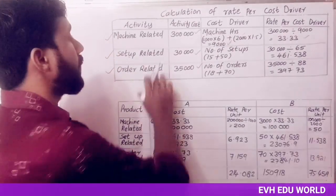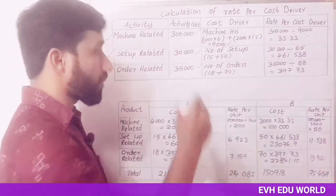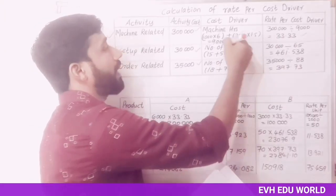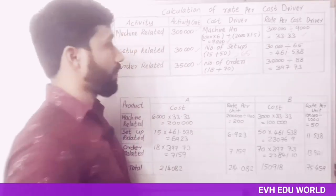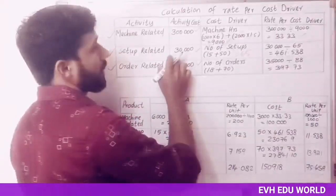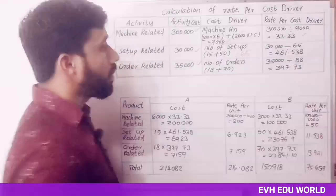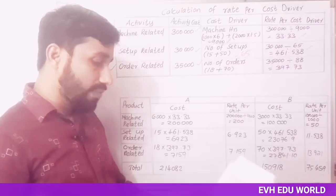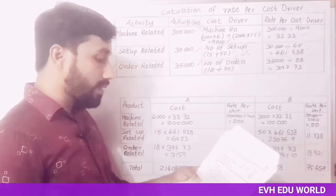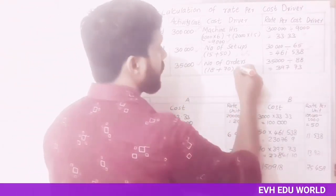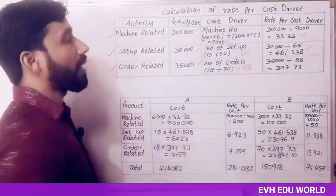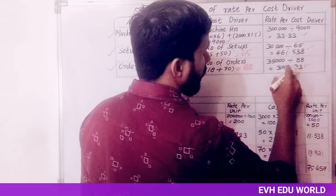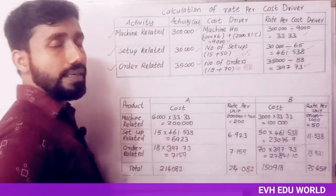For setup-related activity, the activity cost is Rs. 30,000. The cost driver (number of setups) total is 1,550, giving a rate of Rs. 30,000 ÷ 1,550 = Rs. 461.538 per setup. For order-related activity, the activity cost is Rs. 35,000. The cost driver (number of orders) total is 1,880, giving a rate of Rs. 35,000 ÷ 1,880 = Rs. 397.73 per order.